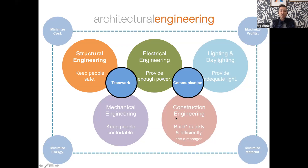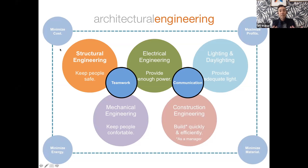You have the opportunity as an architectural engineer to focus in one of these core areas. When a team comes together to design and construct a building, you really have to be able to function well in teams. So we teach you a lot of principles of really good teamwork and communication so that we can come together with overarching objectives: minimizing cost, minimizing energy used in building operations, and minimizing material and resources used.